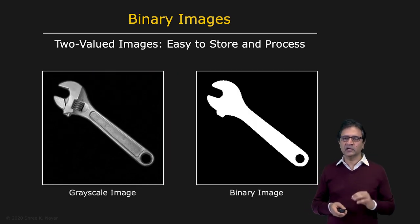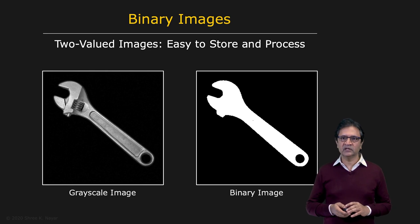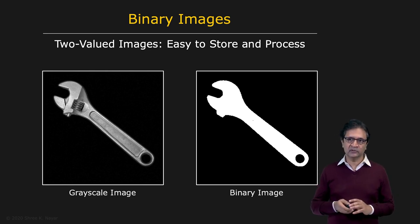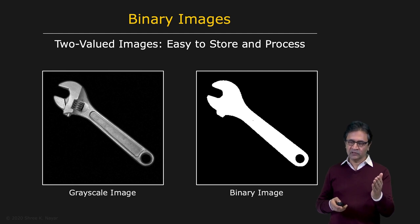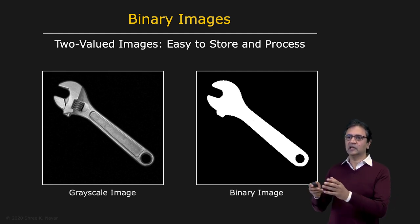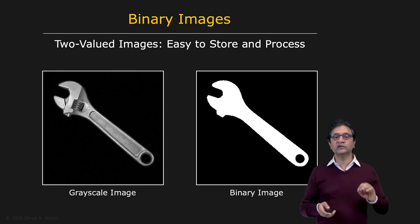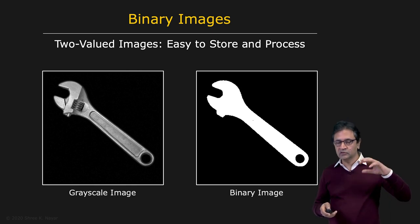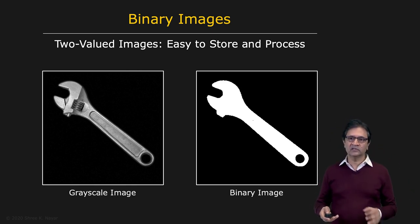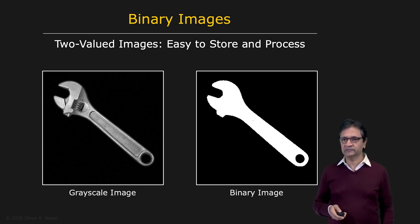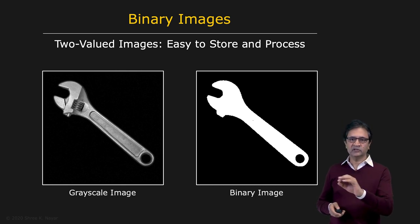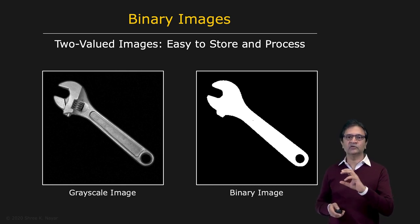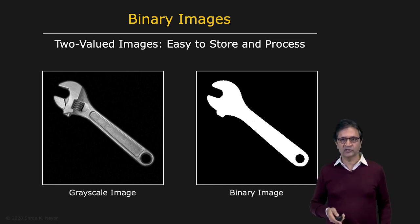Then we look at the simplest type of image you can deal with — it's called a binary image. These are two-valued images. The image on the left, you can simply threshold it to create the image on the right. This is often possible in very structured environments like factory automation or manufacturing lines where you can control both the illumination and the background. Simple thresholding can give you a nice, clean silhouette or binary image of the object — very easy to store, easy to process. You can robustly compute properties of the object and create some very effective vision systems.